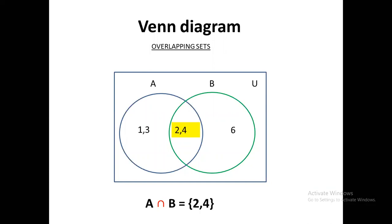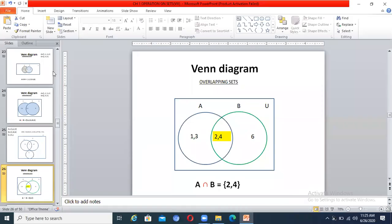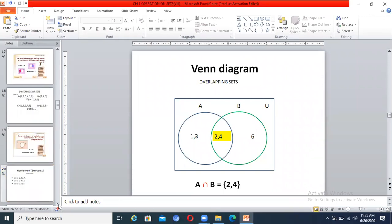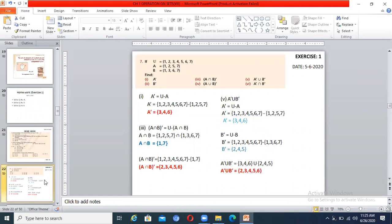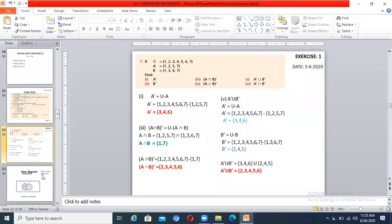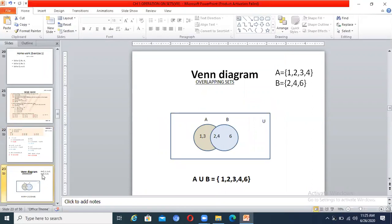Today we have done question number seven — how to find A complement, (A ∩ B) whole complement, and (A ∪ B) whole complement. We also learned how to draw a Venn diagram between two sets like A union B and A intersection B. Later on we will discuss more complex Venn diagrams — like when there are three sets and how to draw the Venn diagram for them.